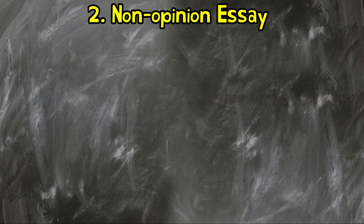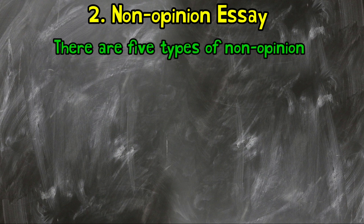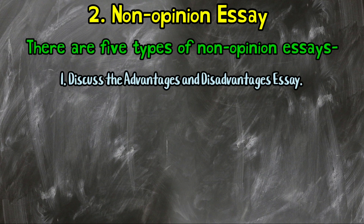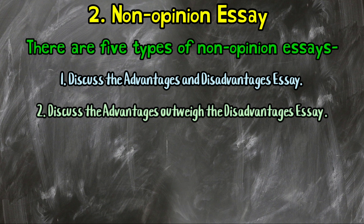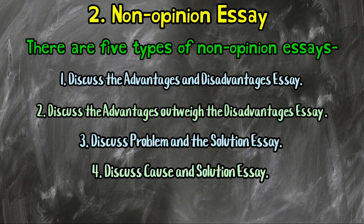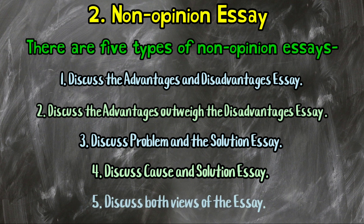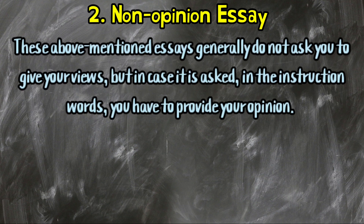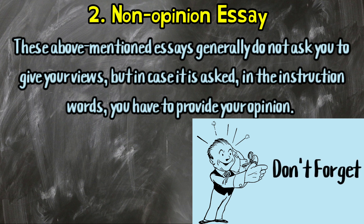Number 2: Non-opinion essay. There are five types of non-opinion essays in IELTS: 1. Discuss the advantages and disadvantages essay. 2. Discuss whether the advantages outweigh the disadvantages essay. 3. Discuss the problem and solution essay. 4. Discuss cause and solution essay. 5. Discuss both views essay. These essays generally do not ask you to give your views, but in case it is asked in the instruction words, you have to provide your opinion.